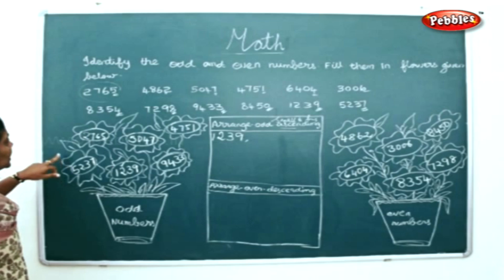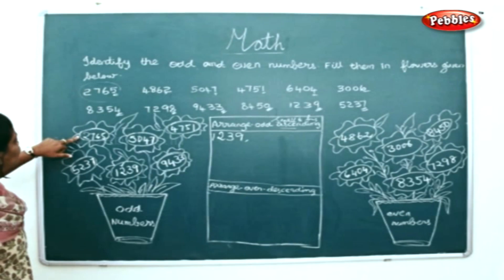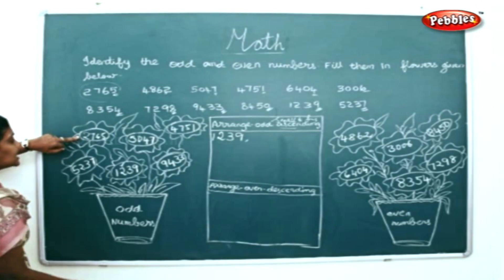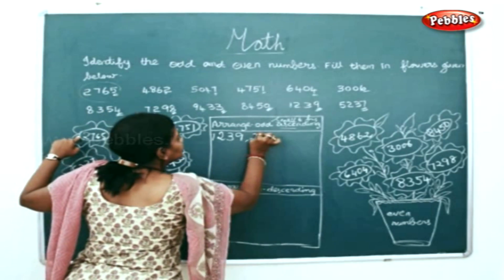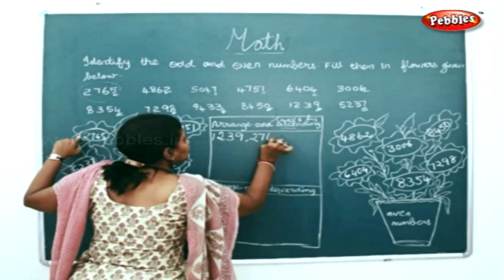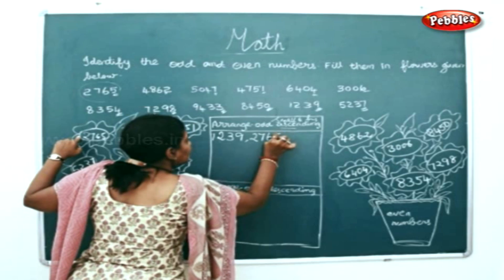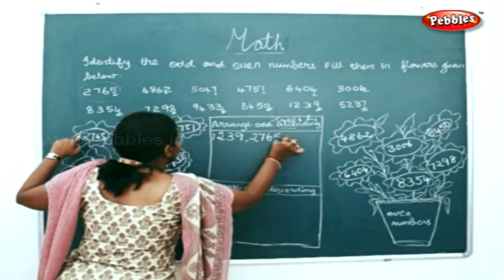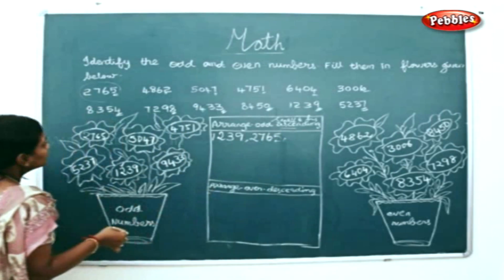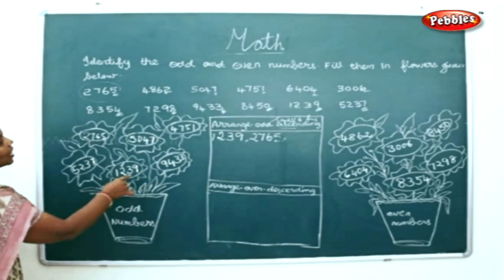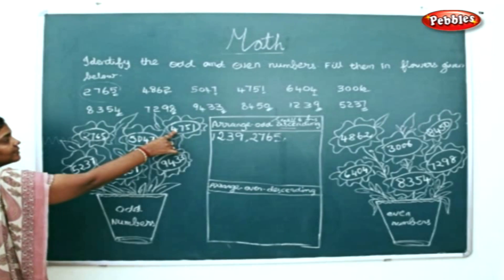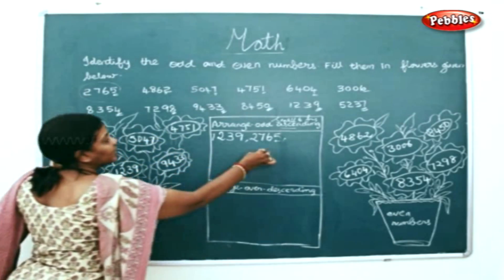The next smallest number will be 2765. The next smallest number will be 4751.